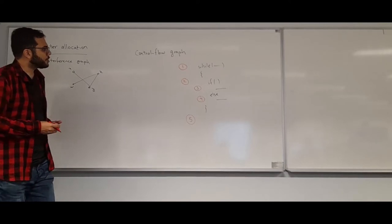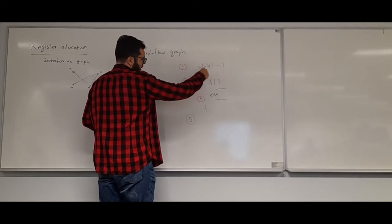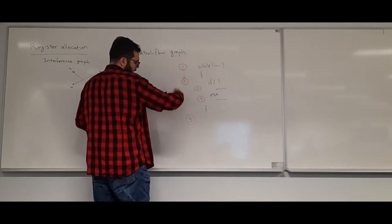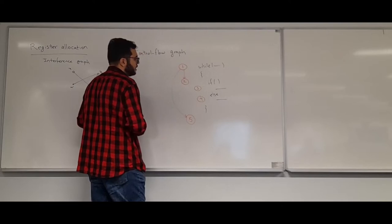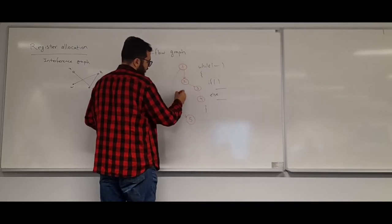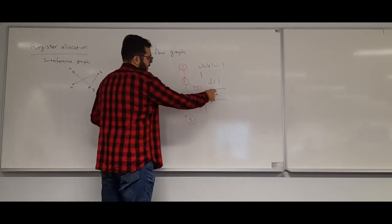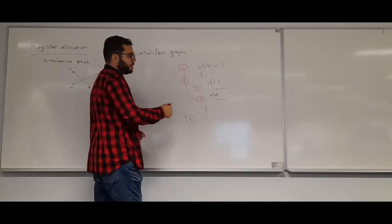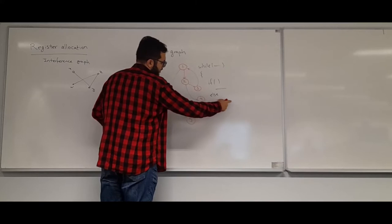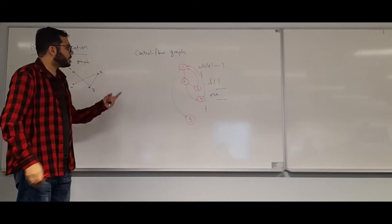The edges in the control flow graph work as follows: from while, if the condition is true, I go inside to the if statement; if false, I go to the end. From the if, if its condition is true I execute one branch; otherwise the other. After each branch executes, I go back to the while loop. So this is what we call a control flow graph.